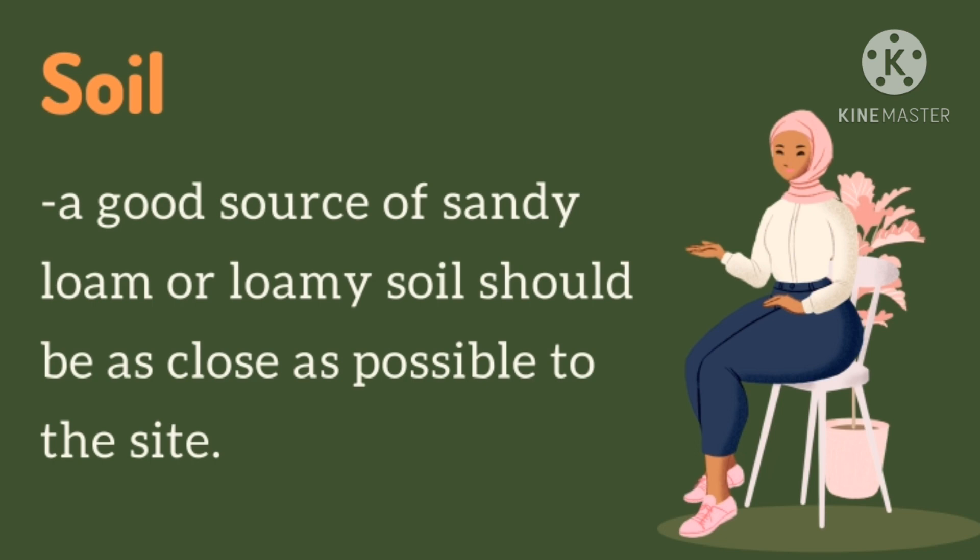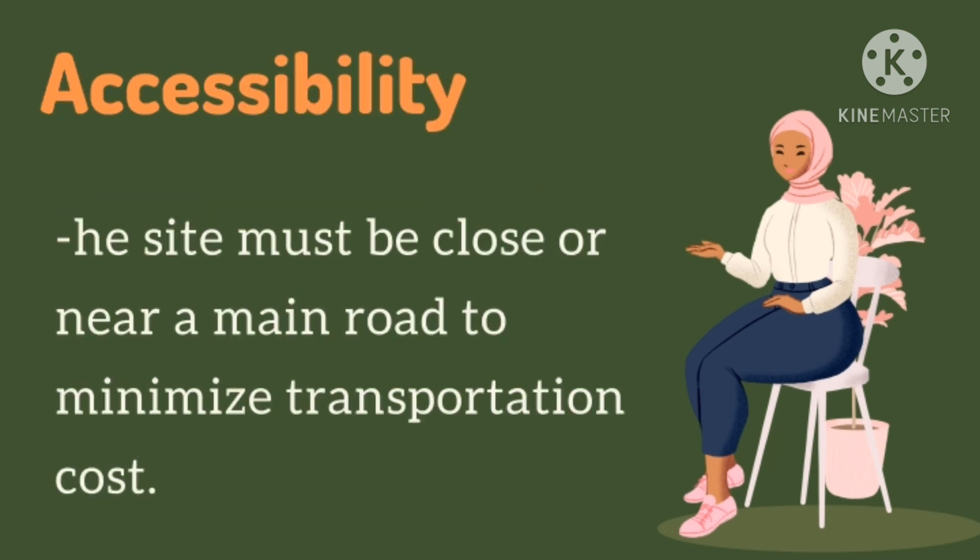Next is the soil, where the plant grows. Most of the time, the kind of soil affects the growth of plants. So a good source of sandy loam or loamy soil, which is the best soil for the plants, should be as close as possible to the site. Accessibility means the site should be near a road to minimize transportation cost, such as handling cost of the products from the site or delivery cost. A good example of this is Benguet farming, where there is overproduction but less income.